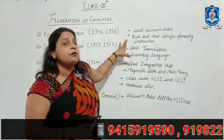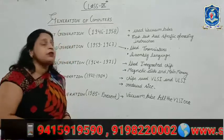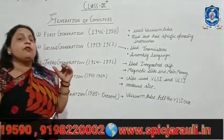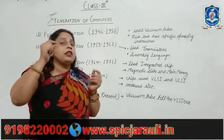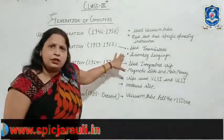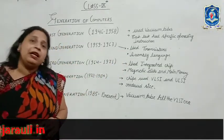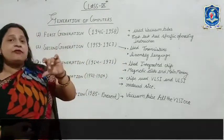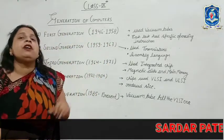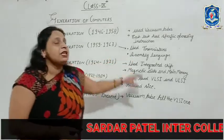Now we come to the 2nd generation. In the 2nd generation, transistors were used instead of vacuum tubes. This generation also stored programs using assembly language. So the main difference between the 1st and 2nd generation is: the 1st generation used vacuum tubes, and the 2nd generation used transistors.